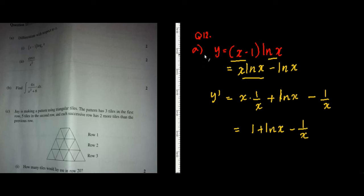So the final solution is going to be 1 plus LNX minus 1 on X. Okay, so that was just part 1 of that.